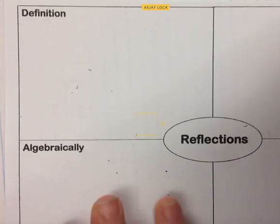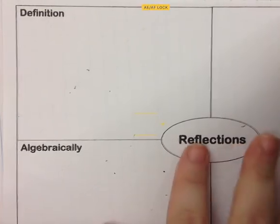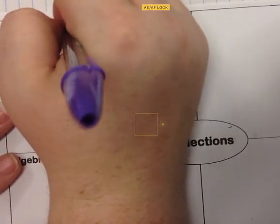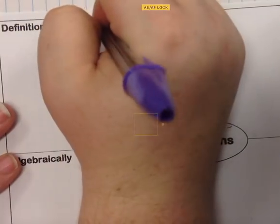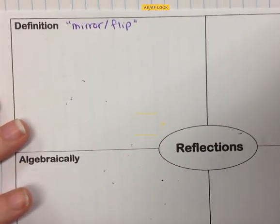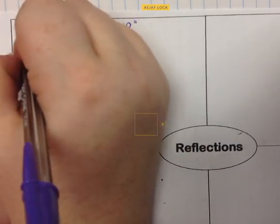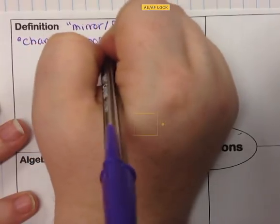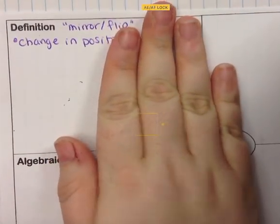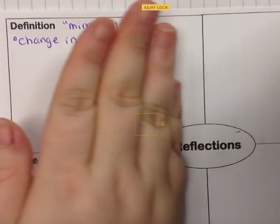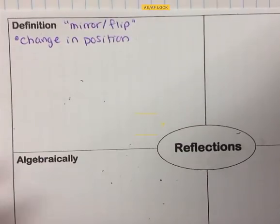This video is about the transformation reflection. Reflection is another word for a mirror or a flip — you might have heard those words before. Reflections will change positions. So if I were to flip my hand, part of my hand would change its position because part of it is moving. That's how you know it's changing in position.